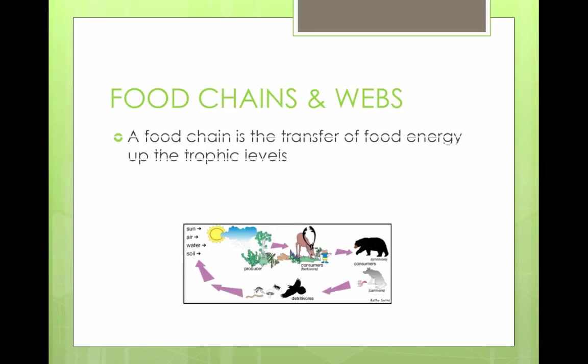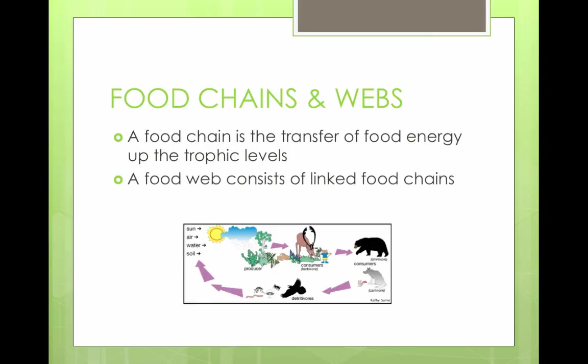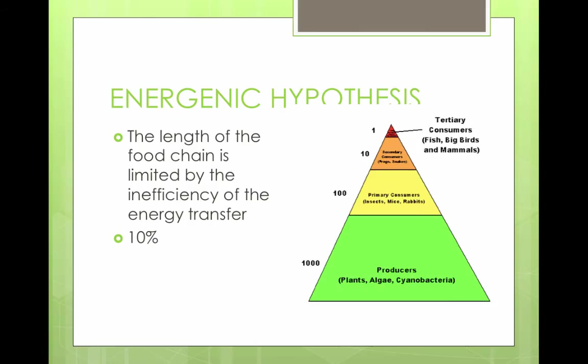Food chains show the transfer of food energy up the trophic levels — from primary producers to herbivores (primary consumers), to carnivores (secondary and tertiary consumers), and then back to decomposers. Food webs link a bunch of food chains. The energetic hypothesis states that the length of a food chain is limited by the inefficiency of energy transfer.